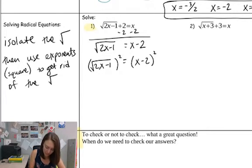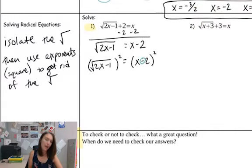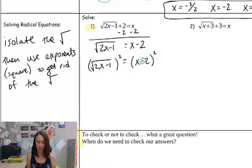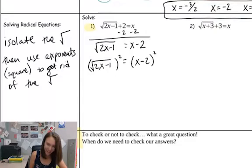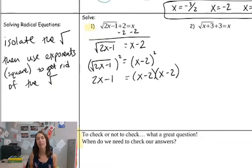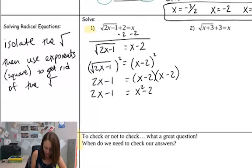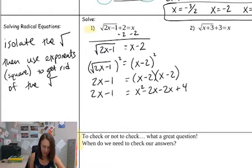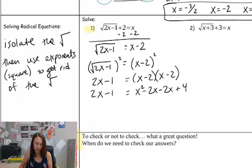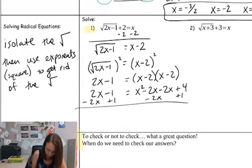Be really careful: when we have a negative or positive in an expression being squared and it's more than just a single term, we are not allowed to distribute that exponent. So what we have to do is this turns into 2x − 1, and then I need to multiply (x − 2) times itself and FOIL that out. So 2x − 1 equals x² − 2x − 2x + 4. Now I can get everything to the same side of the equation and see what I can do — it's a polynomial, so I want to get it equal to zero and then factor.